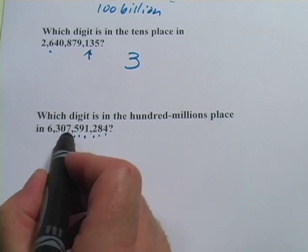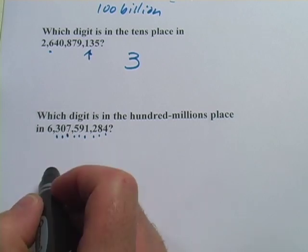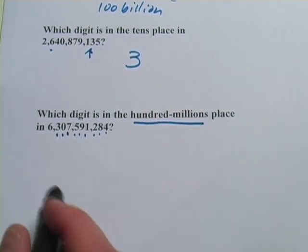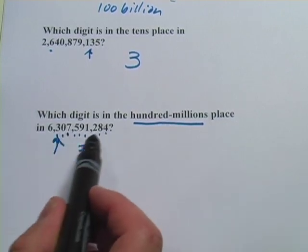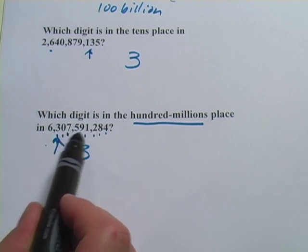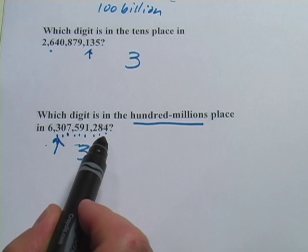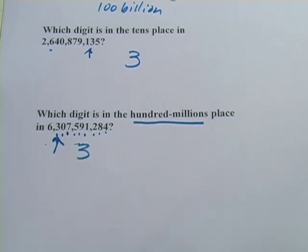One million, 10 million, 100 million. And that's what they want. They want to know what's in the hundred million place. Again that's a 3. If we were going to read this number off, it would be 6,307,591,284. So that's some work with place value.